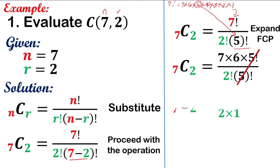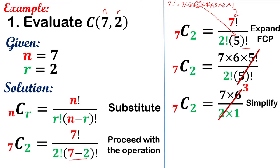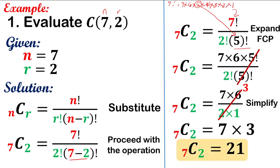Using the cancellation method to simplify: 6 divided by 2 is 3. So you will have 7 times 3, and 7 times 3 is 21. Therefore, the combination of 7 things taken 2 at a time is 21. That's how you use the formula — this is Method 1.